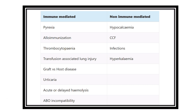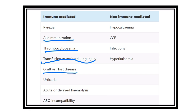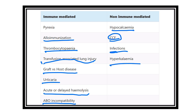First, let's look at the complications of blood transfusion. Immune-mediated causes include pyrexia, alloimmunization, thrombocytopenia, transfusion-associated lung injury, graft versus host disease, urticaria, and acute or delayed hemolysis. ABO incompatibility. Non-immune causes include hypocalcemia, congestive cardiac failure, infections, and hyperkalemia.